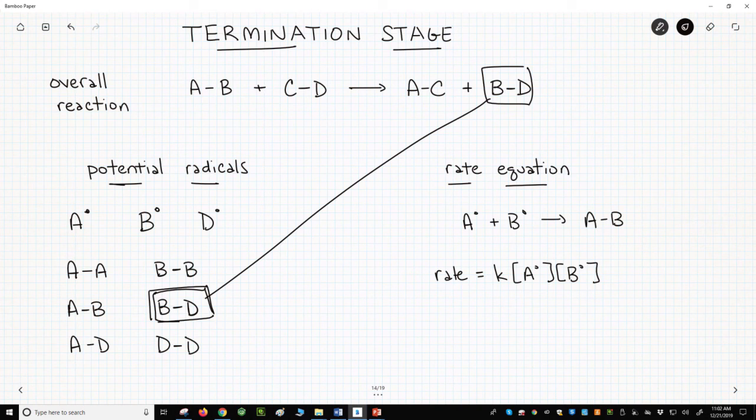That covers the termination stage. Termination involves the combination of two radicals into a stable molecule. Termination steps are slow because the concentration of radicals is very low.